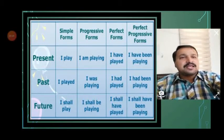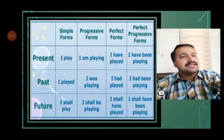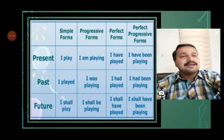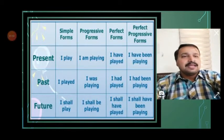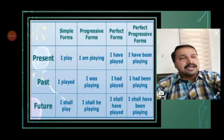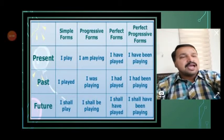In past perfect tense: I had played, you had played, we had played, she had played, he had played, Raju had played — no change. In past perfect progressive or past perfect continuous tense: I had been playing, she had been playing, we had been playing, you had been playing — no change happens.